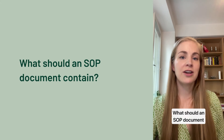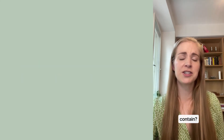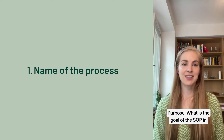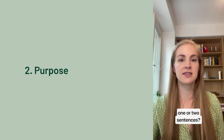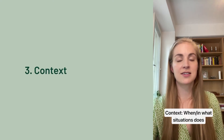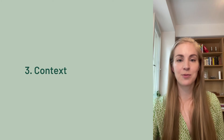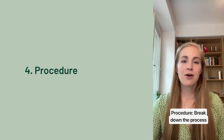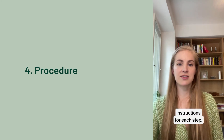What should an SOP document contain? A good SOP document would cover at least the following topics. First, name of the process. Second, purpose — what is the goal of the SOP in one or two sentences? Third, context — when, in what situations does this process take place? Fourth, procedure — break down the process into steps and include detailed instructions for each step. You can document these instructions in many formats such as text, a flowchart, or a video.